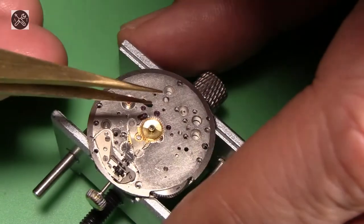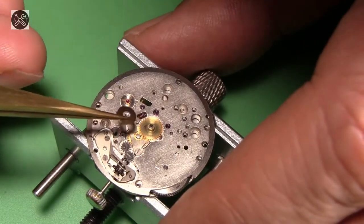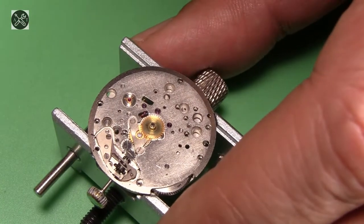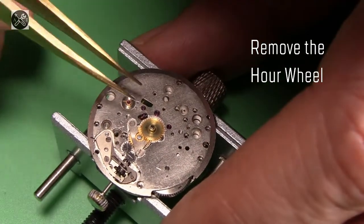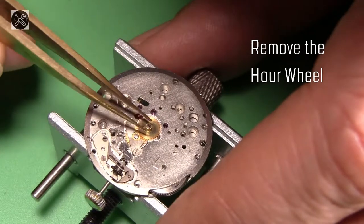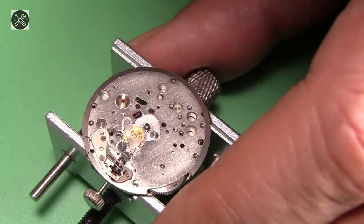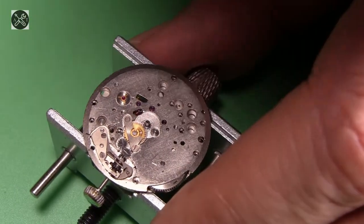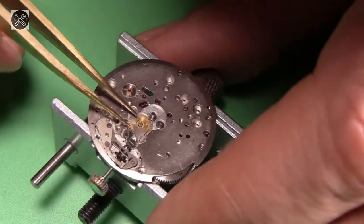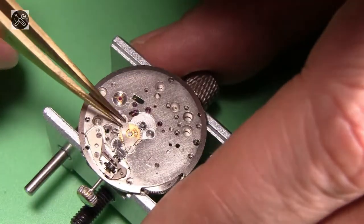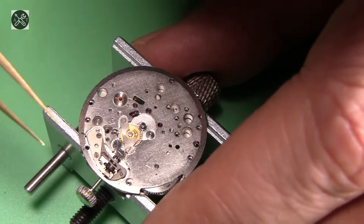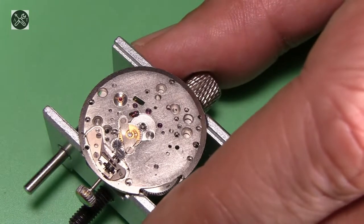I'll remove the washer first, the foil washer, and then the hour wheel. These are the easy bits. Next one will be the minute wheel, which is being covered by this cover plate. I'll just have to remove it first.